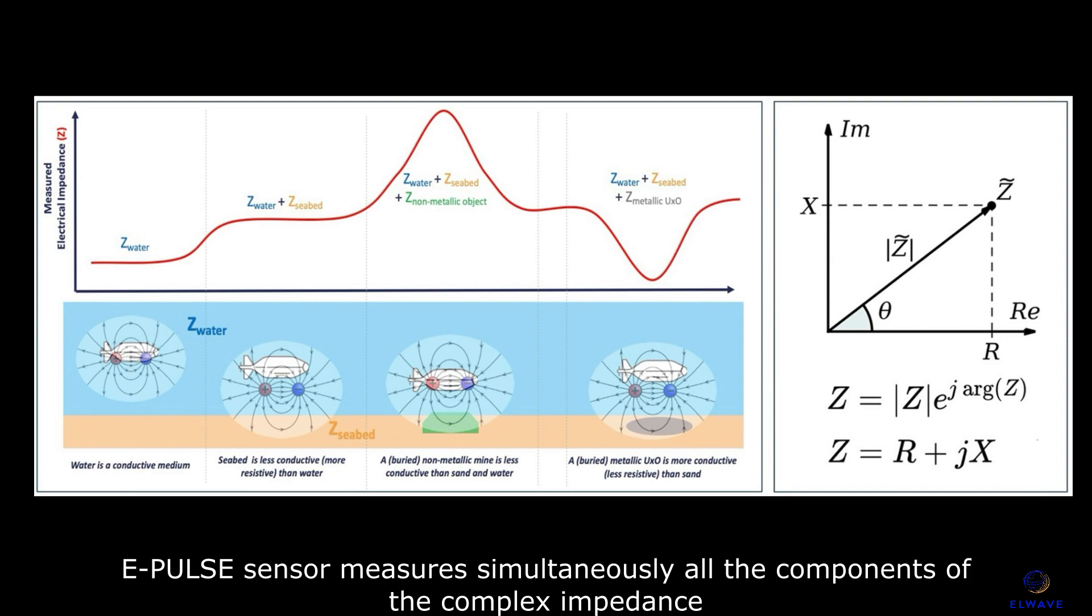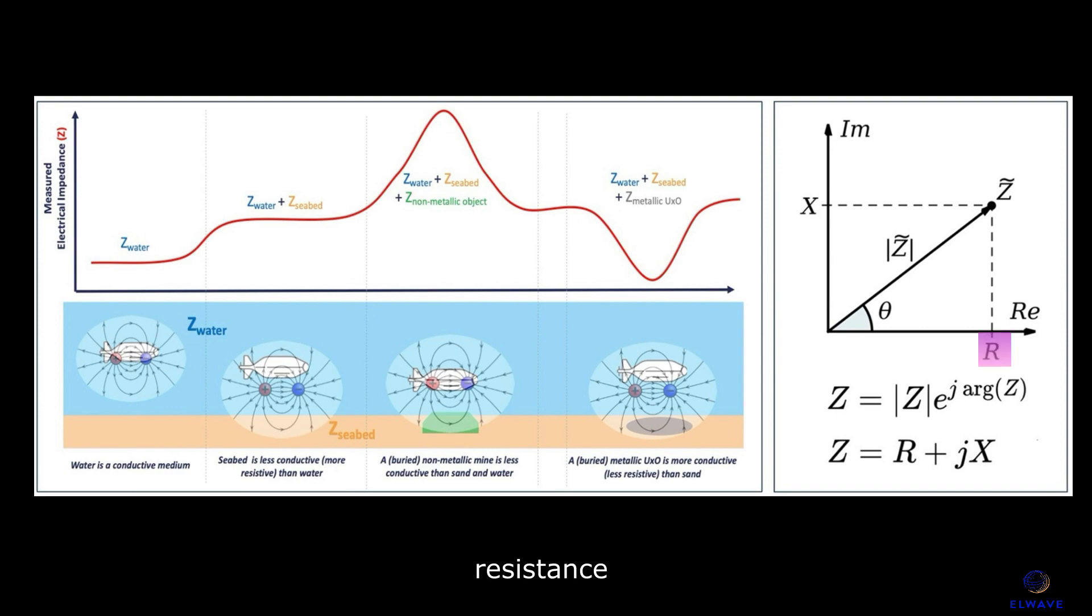The pulse sensor measures simultaneously all the components of the complex impedance: resistance, reactance, amplitude, and phase.